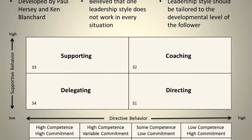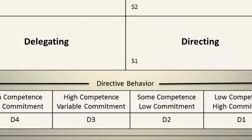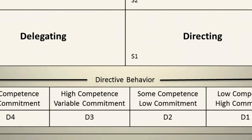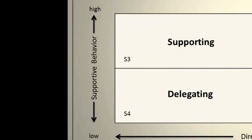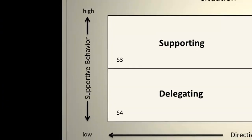As you can see here, there is a particular table or grid with four separate boxes. There are two axes — a vertical and a horizontal axis. On the horizontal axis you'll see what we call directive behavior, and on the vertical axis you'll see what we refer to as supportive behavior.